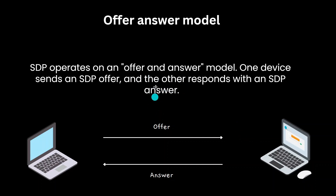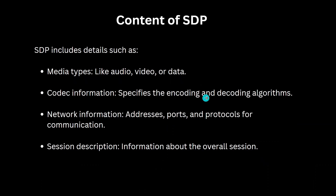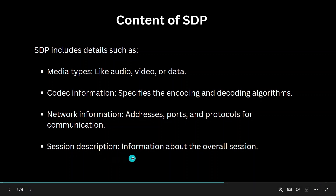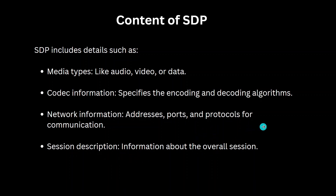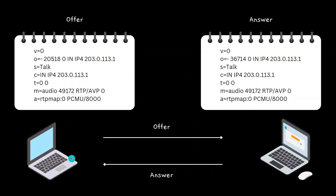This model is called the offer-and-answer model. When an offer is shared, several types of information are transferred between the two devices. First is the media type — audio, video, or data. Second is the codec information, which specifies the encoding and decoding algorithm. Third is the network information, like address, ports, and protocol. And finally, the session description information about the overall session.